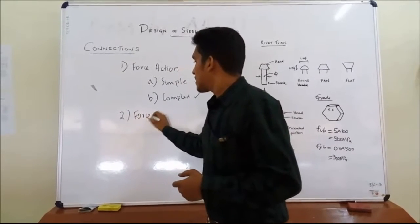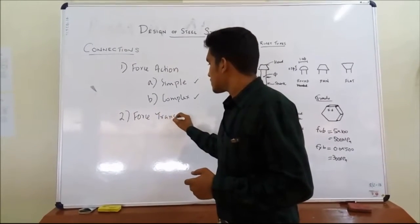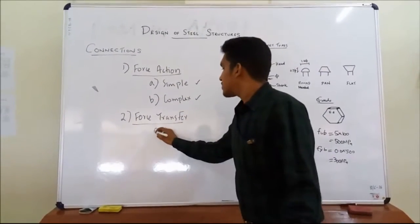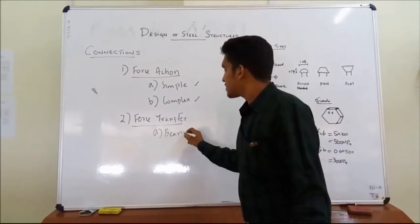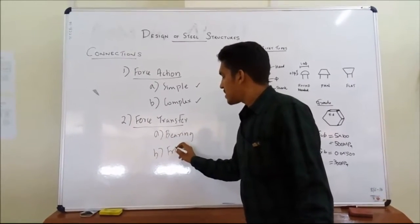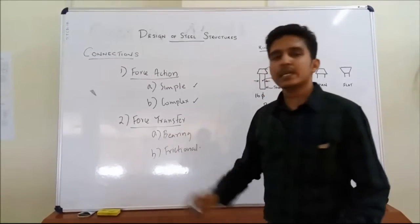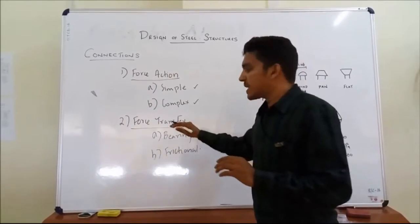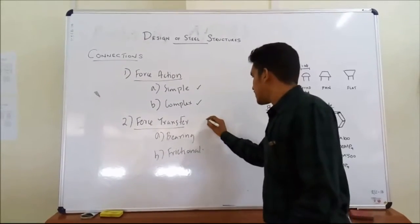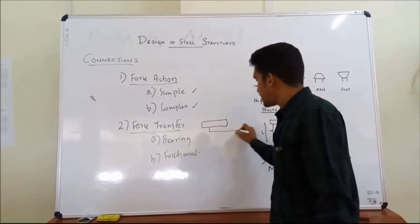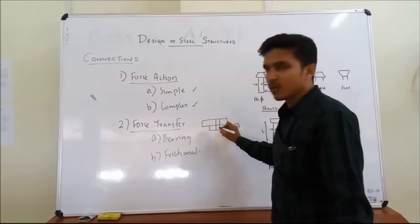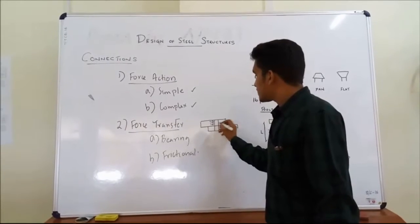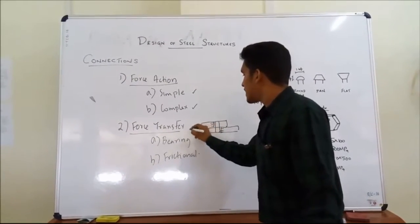Next is force transfer. Based on the force transfer, the connections can be, first one, bearing type. The bearing type of connections, as you hear, the bearing, that is the main action, force acting on it. The transfer of forces is by bearing action. That is, if you see a connection of two different plates, it is connected by a rivet or a bolt. The action is bearing action. This is force transfer by bearing.